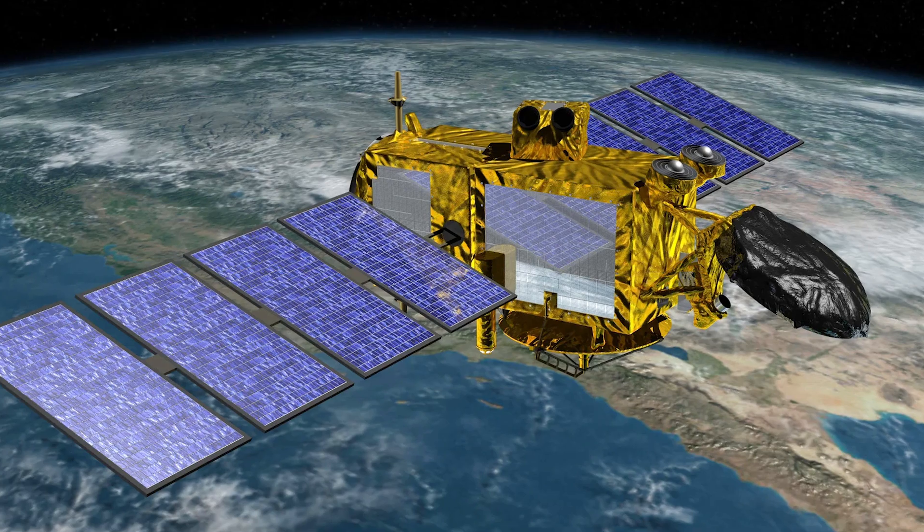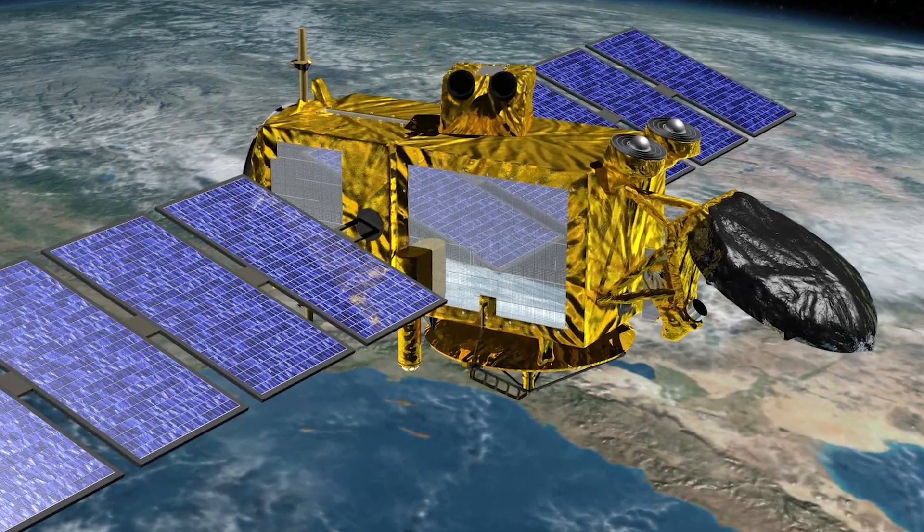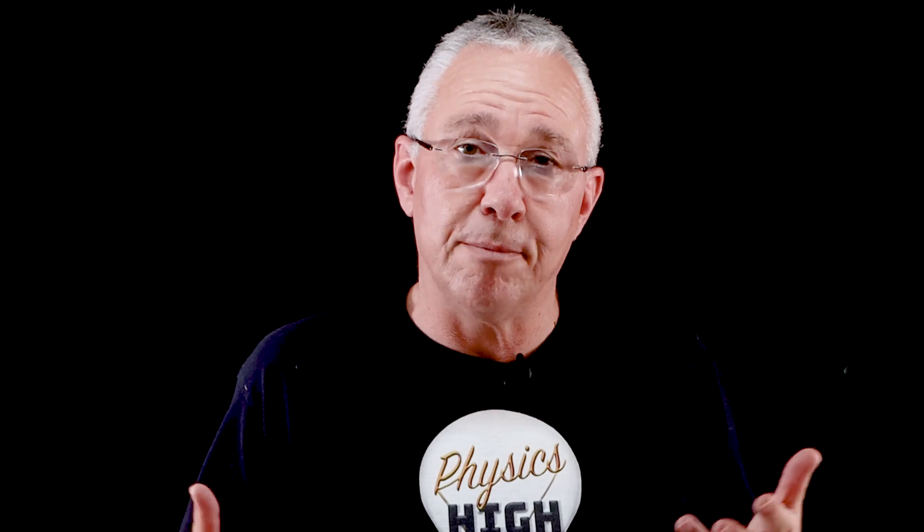Another application is the design of delicate instruments — say, for example, satellites. Satellites generally experience changes in acceleration, such as going into different orbits. Again, systems are designed to reduce the amount of jerk so that it minimizes the wear and tear on these delicate components.